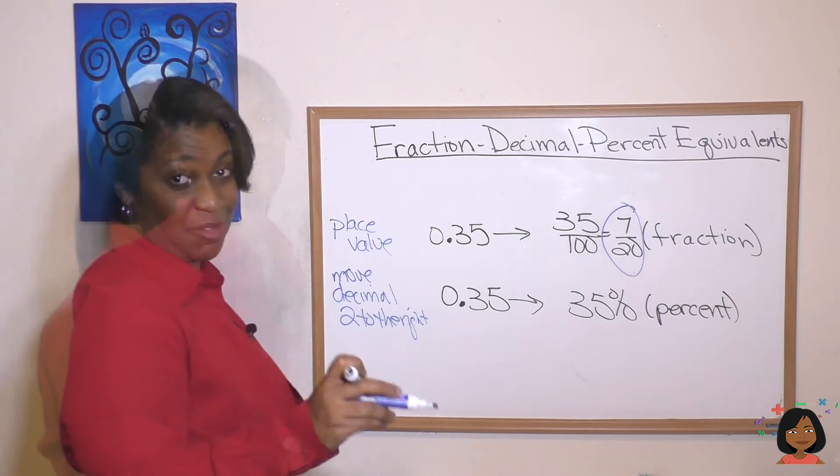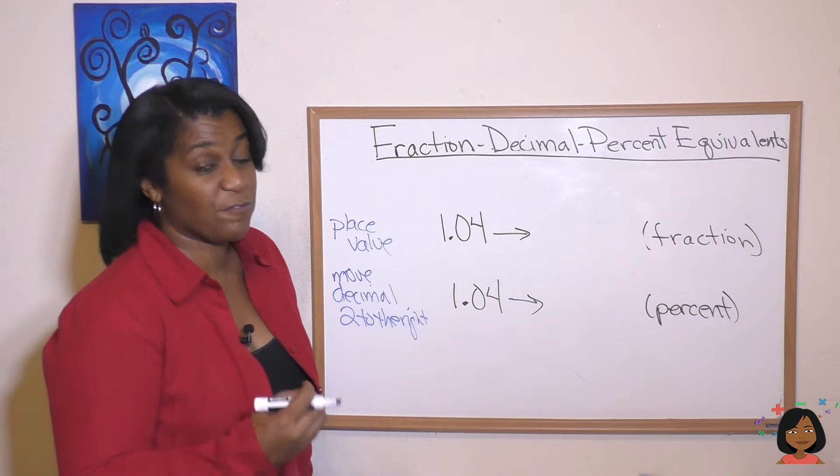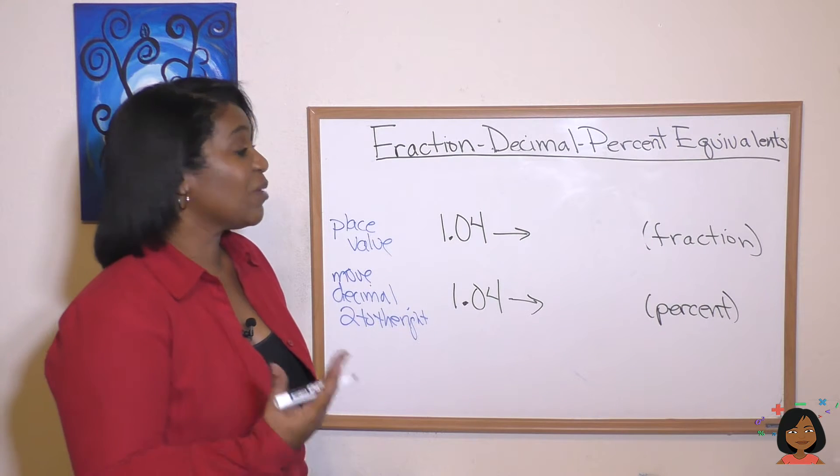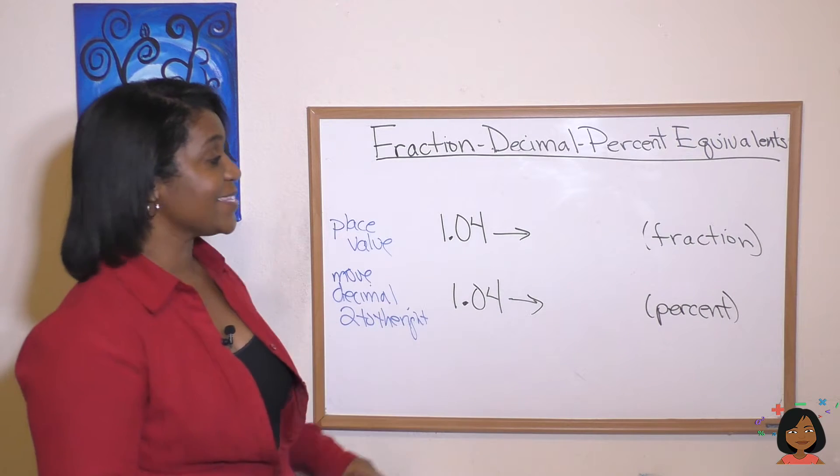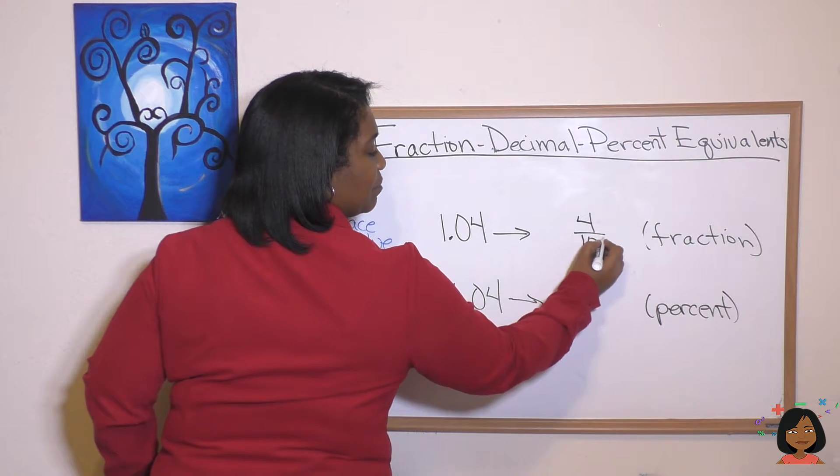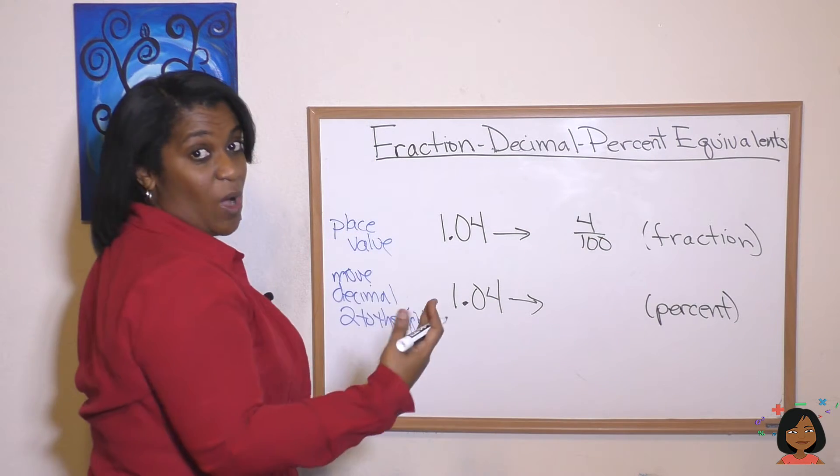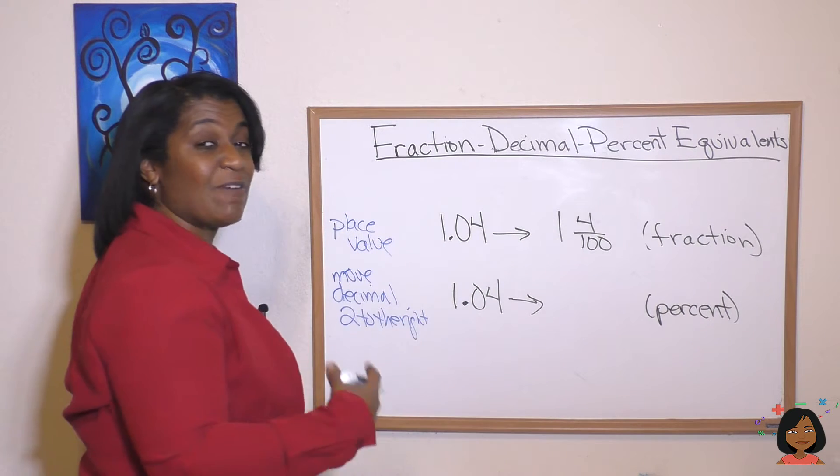Let's try it with another decimal. Take a look at this one. Here we have 1.04 as our decimal. We first want to move it to a fraction. So we look at the place value of the last digit and we know that's going to be 4 over 100. And we look at our 1. We know our 1 still is a whole number so it goes right in front. We have a mixed number.